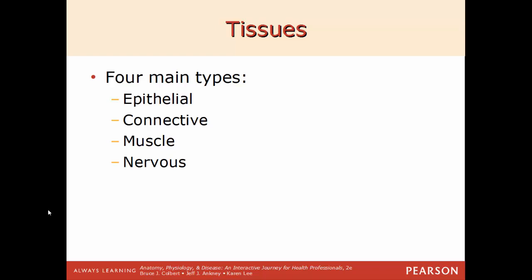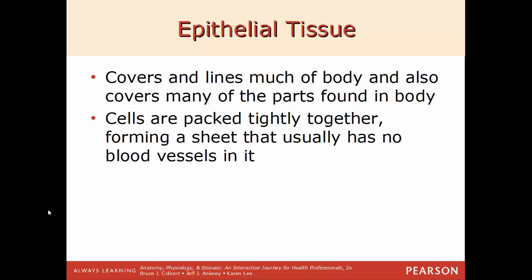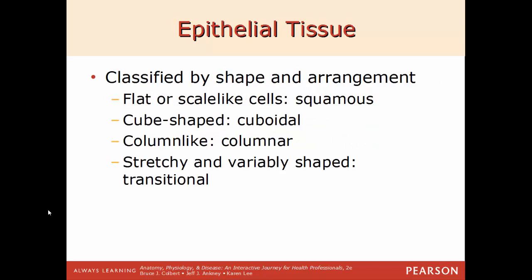We'll talk about all four in this video. The first is epithelial tissue. This tissue covers and lines most of the body and most body parts. In this type of tissue, cells are very tightly packed together and usually form a sheet of cells. This tissue will be avascular — you will not find blood vessels within it. Epithelial tissue is classified by the arrangement and shape of its cells.